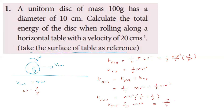Substituting values: mass = 100 g = 100/1000 = 0.1 kg, velocity = 20 cm/s = 20/100 = 0.2 m/s. Rolling KE = (3/4) × 0.1 × (0.2)² = (3/4) × 0.1 × 0.04 = 3/1000 = 0.003 J.